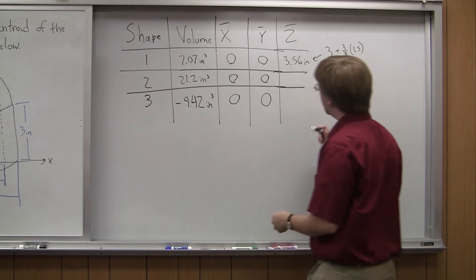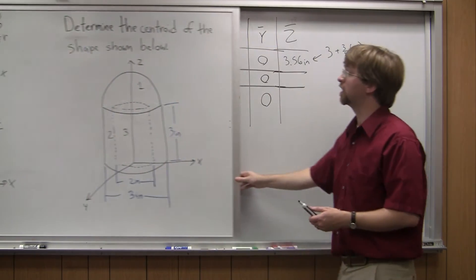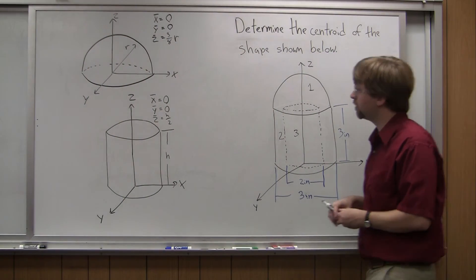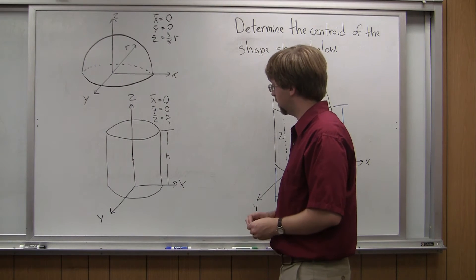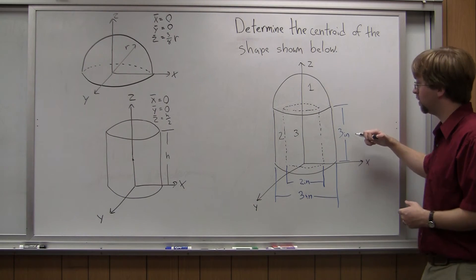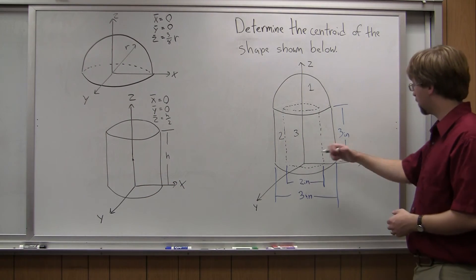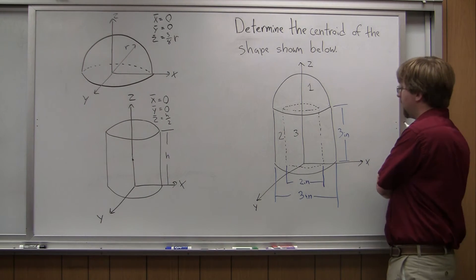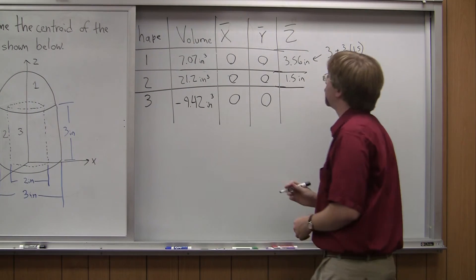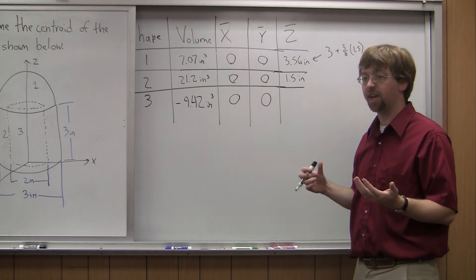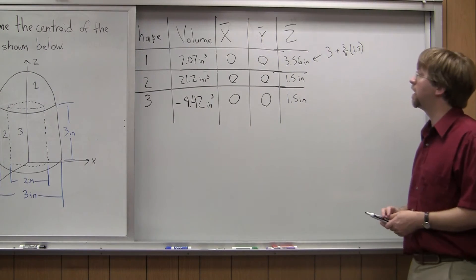Now I've got my cylinder. For the cylinder, the centroid coordinate is right in the center at h over 2 — halfway up the height. My overall height is 3 inches, and the origin lines up, so I can do one half of 3 inches, which is 1.5 inches. For my cutout, it's the same deal. My radius has changed, but the height and orientation haven't changed. So my cutout also has a z̄ value of 1.5 inches.